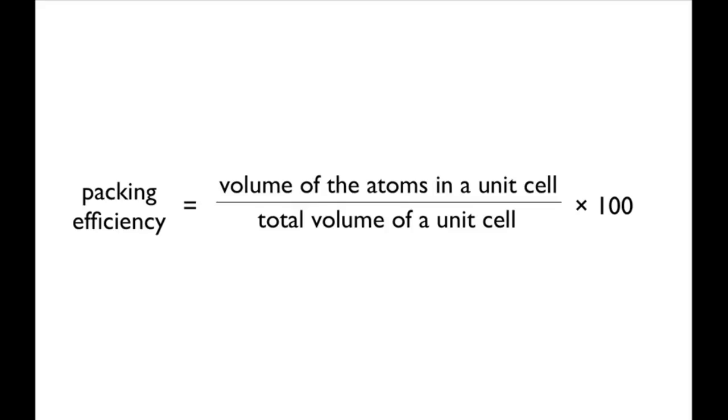The packing efficiency is given by the volume of the atoms in a unit cell divided by the total volume of the unit cell, with the answer multiplied by 100 to give us a percentage. So to work out the packing efficiency for a particular structure, you need to work out two things: the volume of the atoms in a unit cell and the total volume of the unit cell.